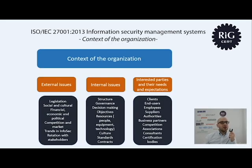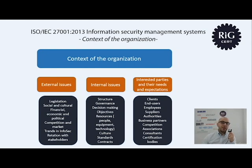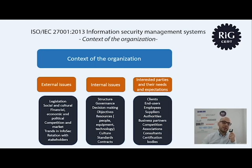From here on we begin discussing the requirements of ISO 27001, specifically the 2013 edition of the standard, which is applicable now and is the last revision. We will begin discussing the requirement called context of the organization, which is the fourth chapter. The first three chapters — scope, normative references, and terms and definitions — are not requirements, so we begin with the actual requirements of the standard.